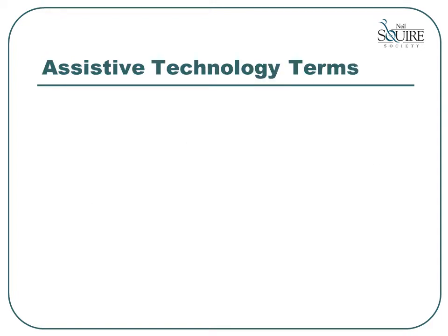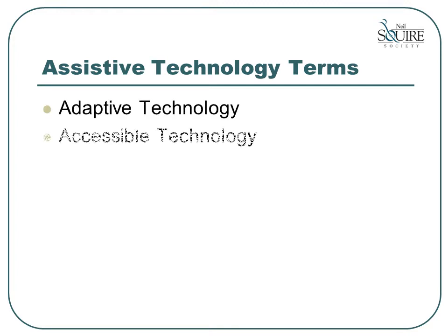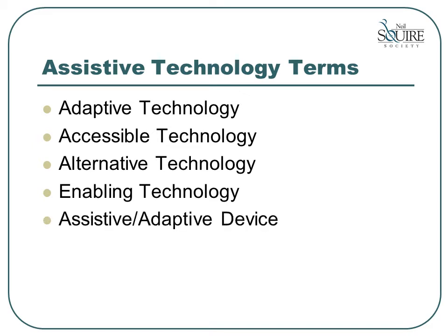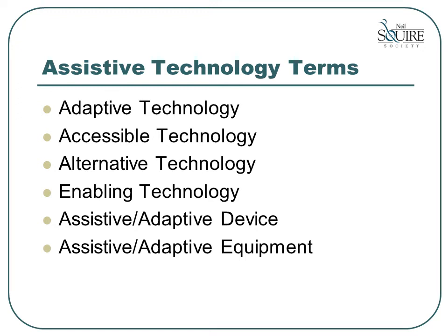Another complication in the field of assistive technology is the use of different terms to refer to the same type of equipment. You may hear someone refer to adaptive technology, accessible technology, alternative technology, enabling technology, assistive or adaptive device, or even assistive or adaptive equipment. Also, sometimes people in the field just use the initials AT. When you hear any of these terms, you can be confident that we are all talking about the same type of technology.